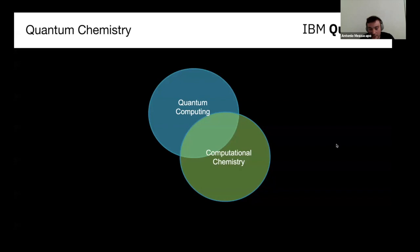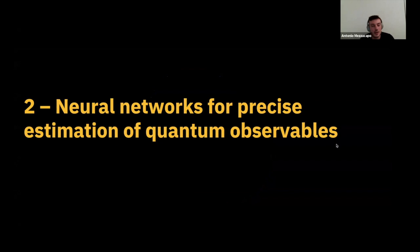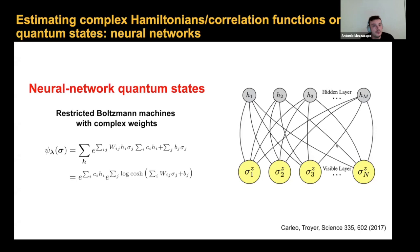I promised I was going to say something about machine learning, so let me add the machine learning blob back to my Venn diagram and move finally to neural network quantum states — the second idea I wanted to present. Here we want to target the same problem as before: precise estimations of complex observables. Neural network quantum states are a parameterization of wave function amplitudes introduced by Carleo and Troyer in 2017.